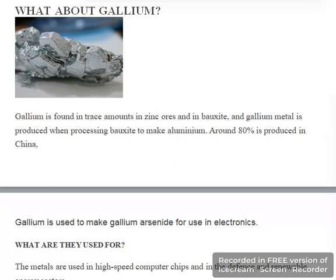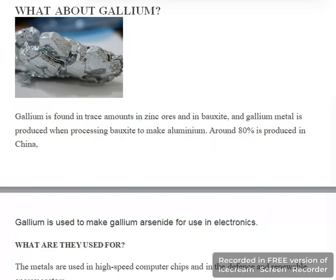Gallium is found in trace amounts in zinc ores and in bauxite. Gallium metal is produced when processing bauxite to make aluminium, and around 80% is produced in China.